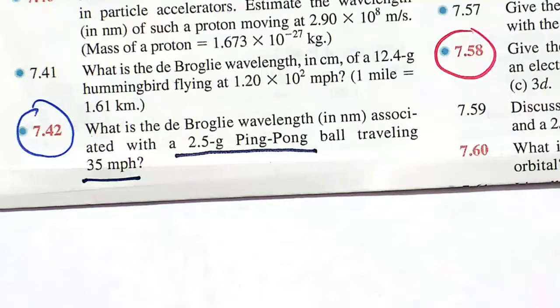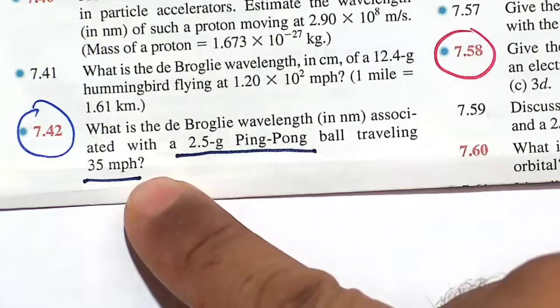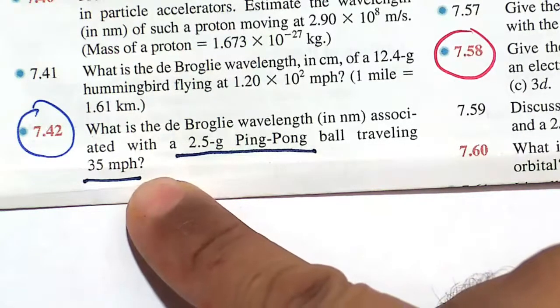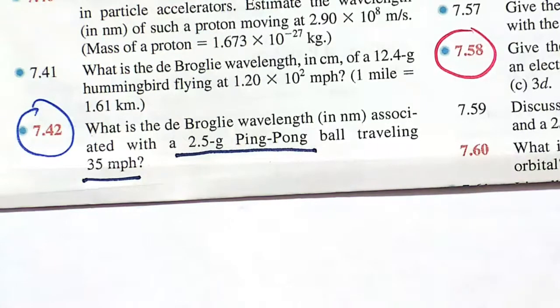That object is a macroscopic object. A ping-pong ball has weight and is something you can see, unlike an electron or even an atom. But it's moving at this speed. What de Broglie said is that there's actually a wavelength component to something that's moving. It's just so small and very hard to detect.